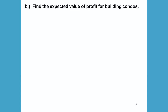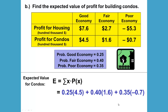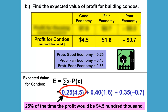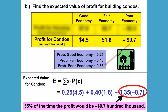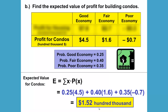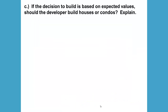Part B: find the expected value for building condos. The expected value is again the sum of x times p(x). This time we only look at the condos. 25% of the time the profit would be 4.5 hundred thousand; 40% of the time the profit would be 1.6 hundred thousand; and 35% of the time the profit would be negative 0.7 hundred thousand — for a total of 1.52 hundred thousand dollars as the expected profit for building condos.